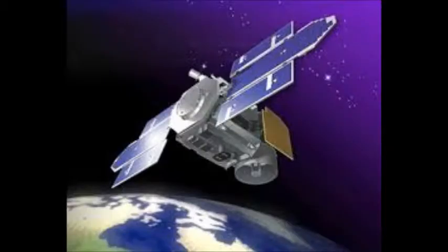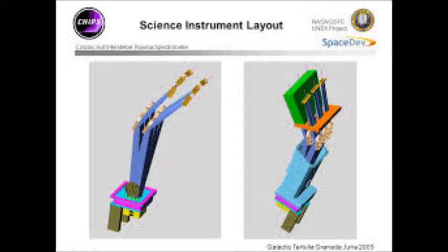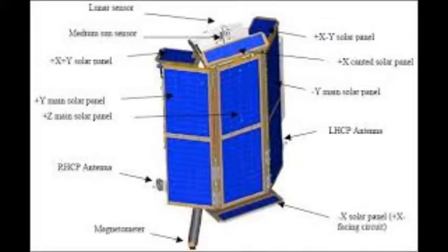CHIPS launched on January 12, 2003 as a secondary payload aboard the Delta II launch vehicle. Although CHIPS had a design life of only 18 months, it operated successfully for over five years.